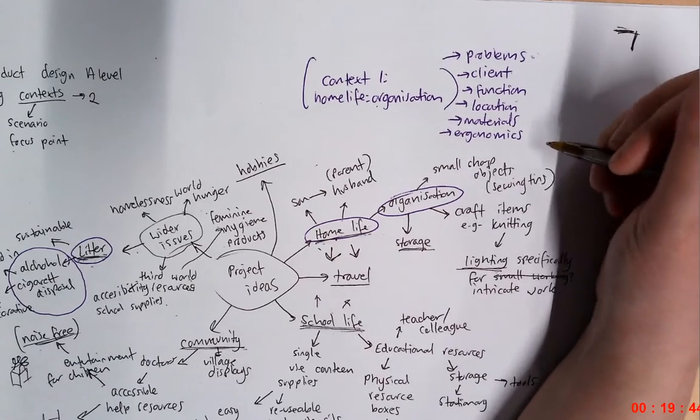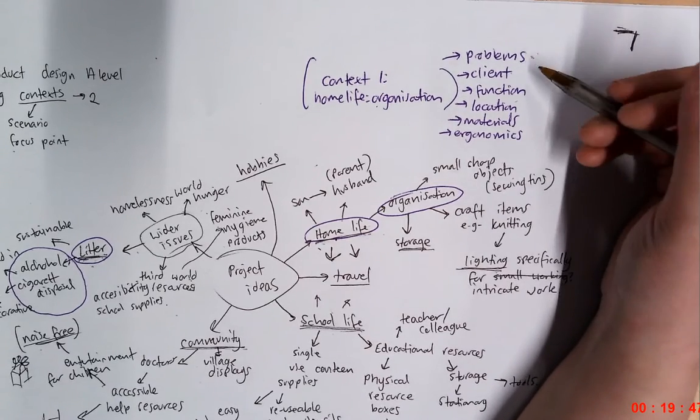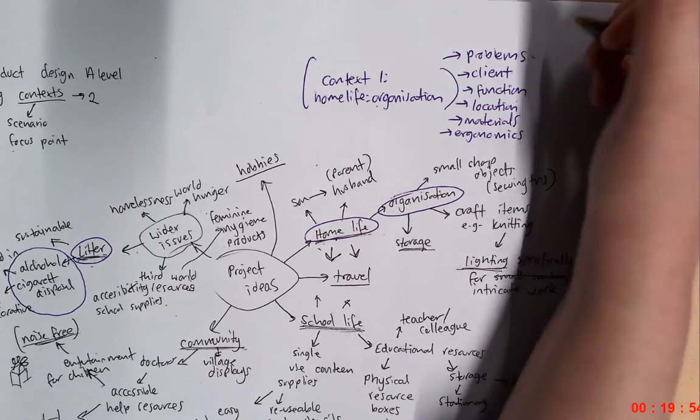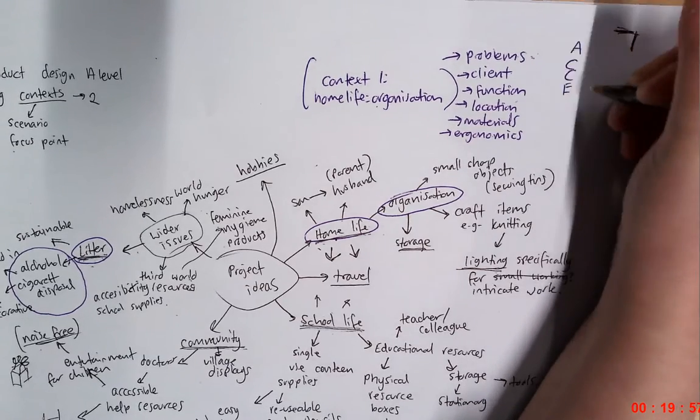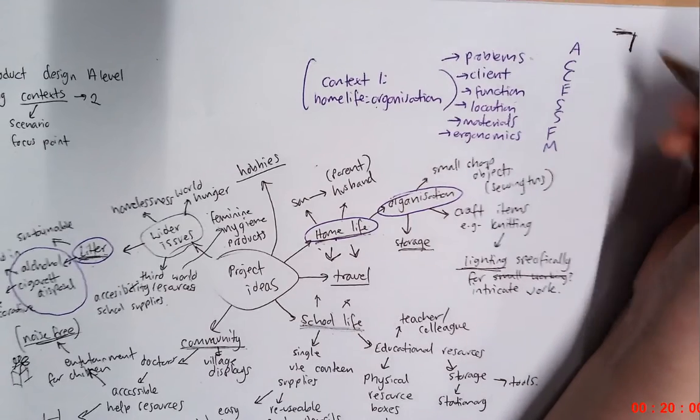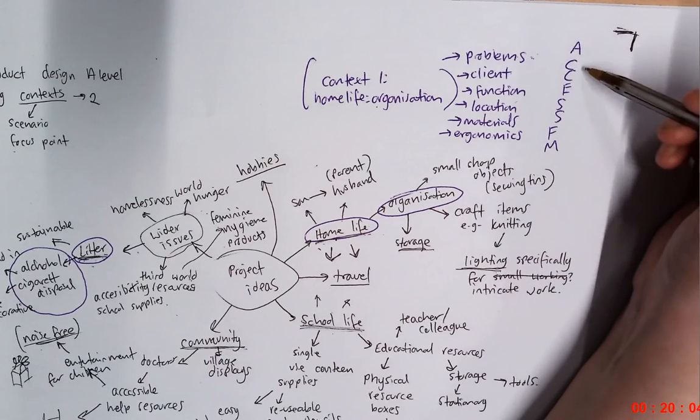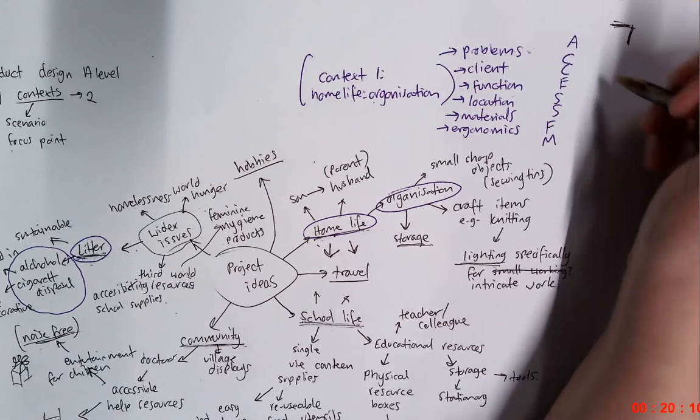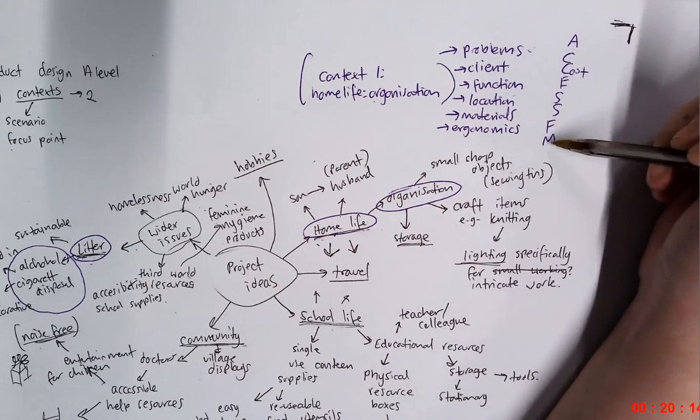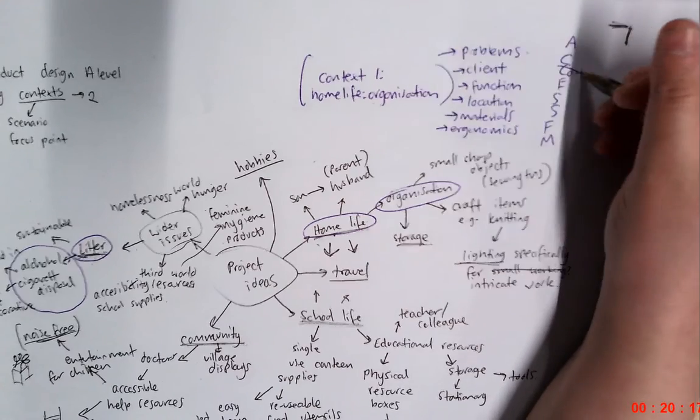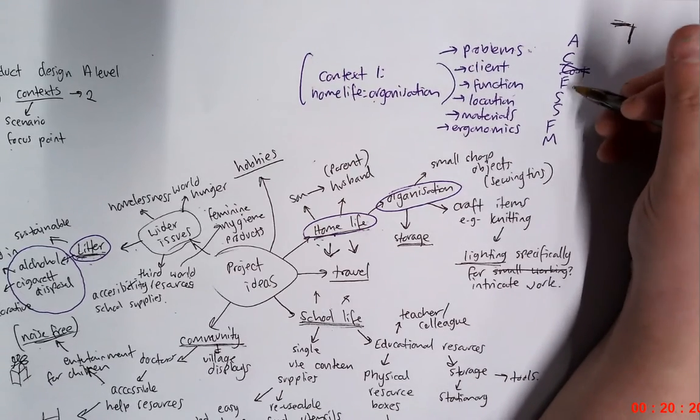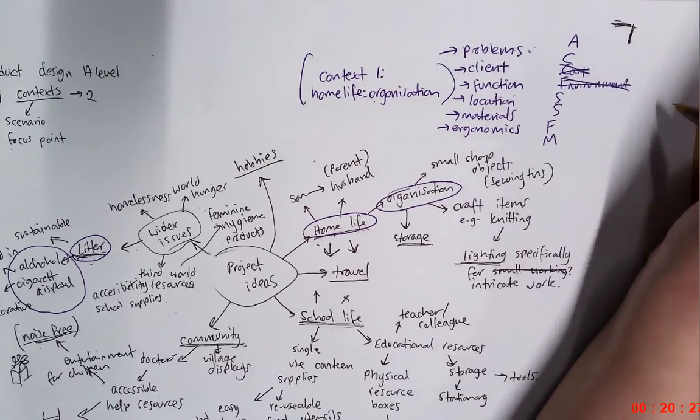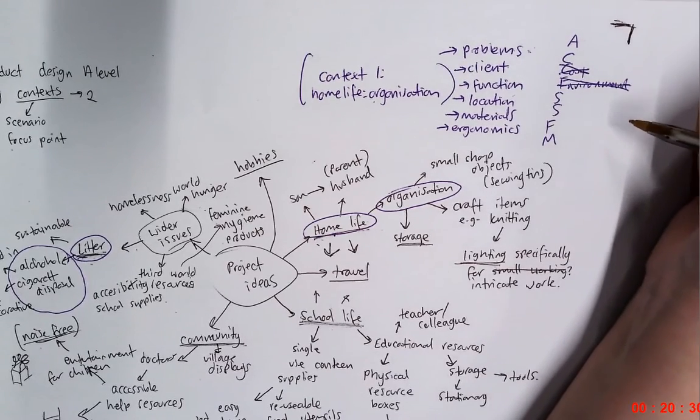And then the final thing that you could add onto here would be ergonomics. So how can you make it comfortable, easy to use, but also accessible? And these are the six things that I would focus on first of all. You can also use any other areas from AccessFM if you so wish, if we haven't mentioned them. But you don't need to use the whole of AccessFM because sometimes it can be fairly limiting. Use the areas that are actually going to be useful and beneficial for you. So for example, cost. If your project, if you're not fussy on cost at the moment, if cost isn't anything that you're interested in, then don't worry about exploring it at this moment in time.